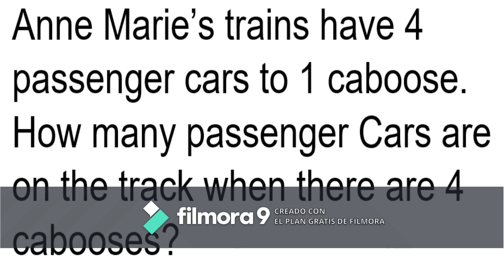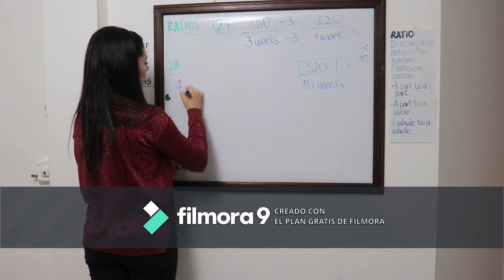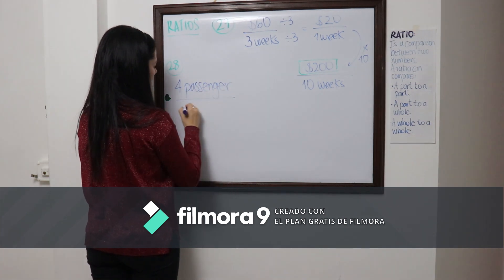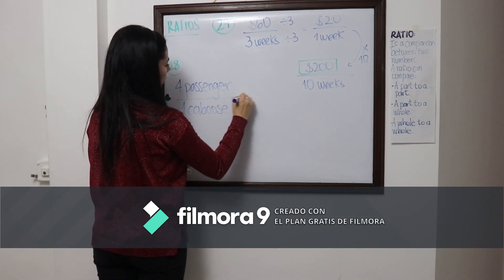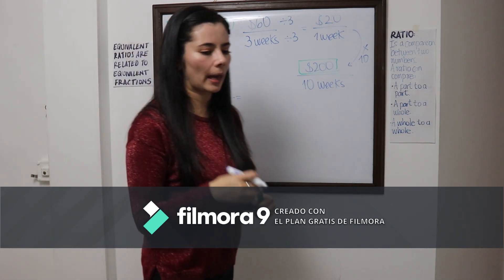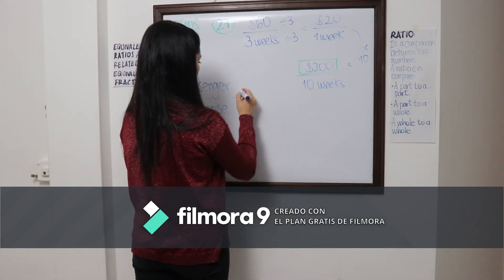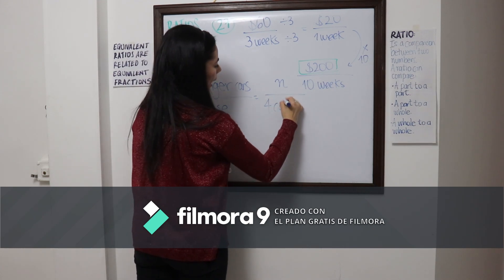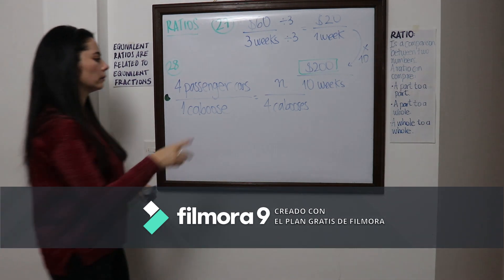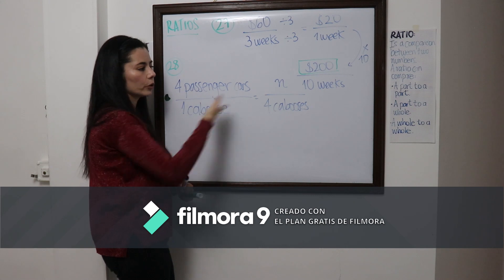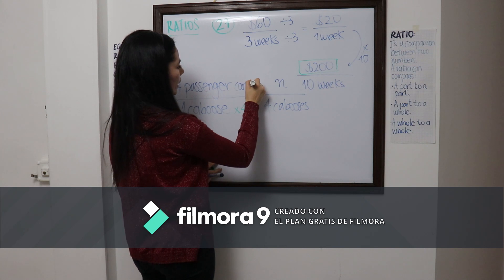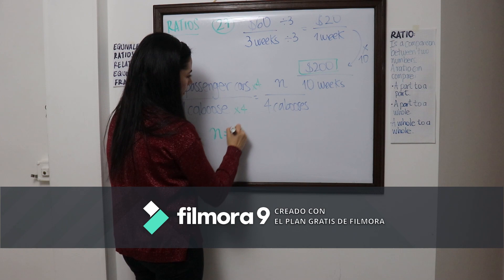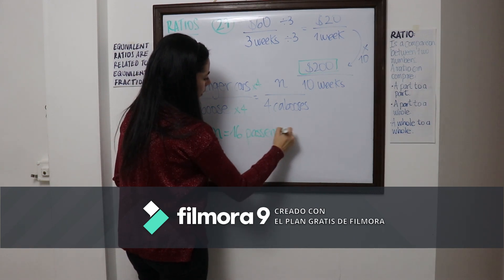Problem 29: Aunt Mary's trains have 4 passenger cars and 1 caboose. How many passenger cars are on the track when there are 4 cabooses? We set up the ratio: 4 passenger cars to 1 caboose. We need to find how many passenger cars when we have 4 cabooses. Using equivalent ratios, the answer is 16 passenger cars.